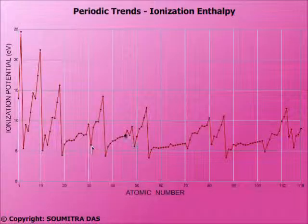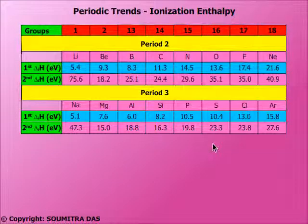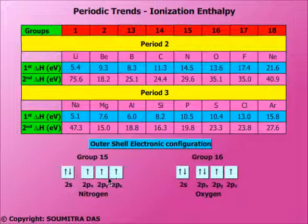The decrease in ionization enthalpy after the D block is also for the same reason. There is also a decrease as we go from group 15 to group 16. This is because there is a half-filled p orbital in group 15, and for ionization the outer electron has to overcome the exchange energy. Moreover, the outer electron in group 16 is paired and the electron-electron repulsion facilitates the removal of the outer electron.